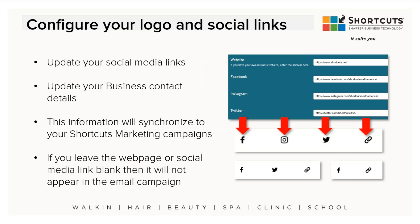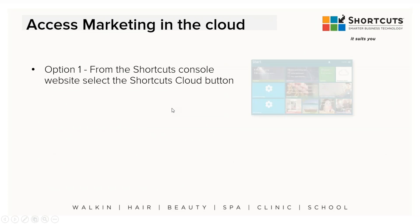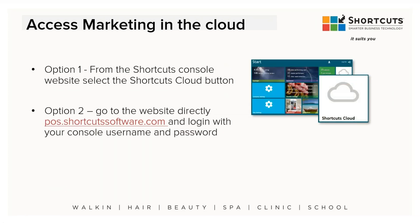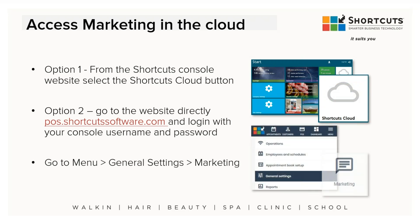So to recap the pre-campaign setup: configure your customers in the Shortcuts point of sale so they can opt in or out of campaigns — every time you have a new client, they get opted in or out. Then go online and update your site settings — add your logo, add your social media. Once you do that, you're ready to access the cloud and actually set up email campaigns.